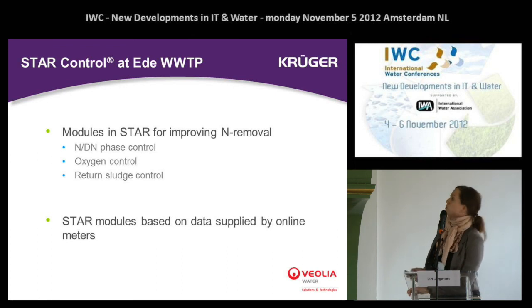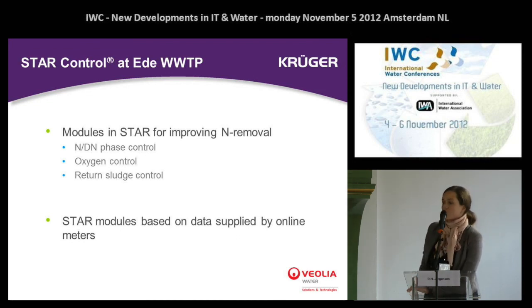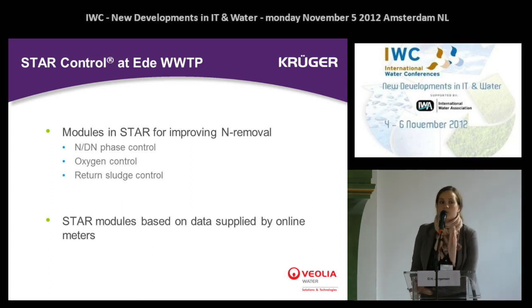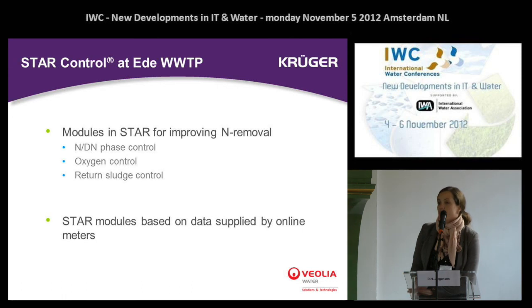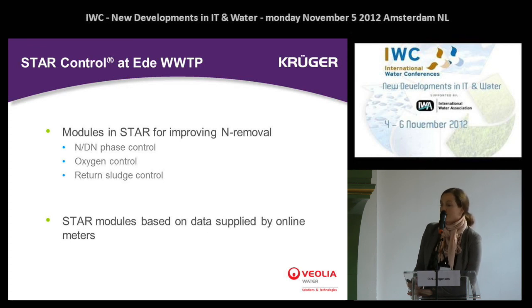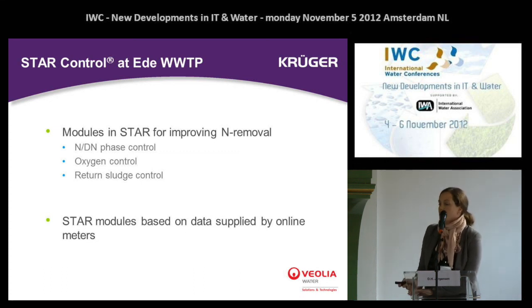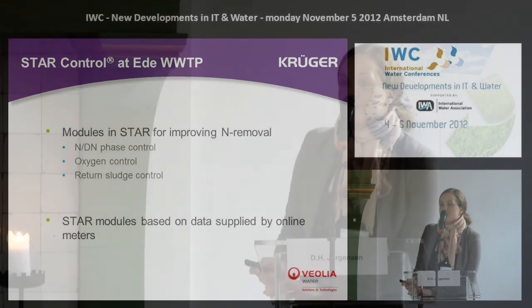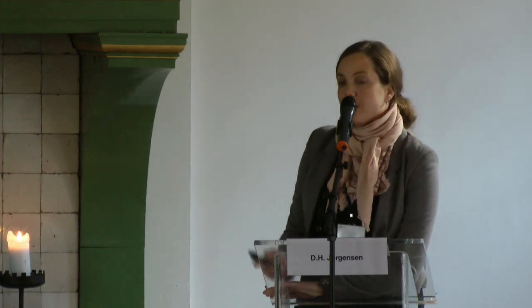The STAR control at Ede hosts the following modules: phase NDN phase control, oxygen control, and return sludge control. The phase control manages the length of phases and whether operation should be in nitrification or denitrification. The oxygen control manages the dissolved oxygen set point delivered to the process tanks — in this case with many individual set points per tank. The return sludge control is based on suspended solids in the return sludge flow and sludge blanket meters at the final settling tanks. It is important to note that STAR control is based on data supplied by online meters.